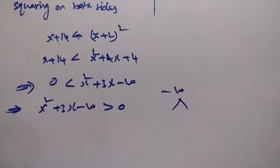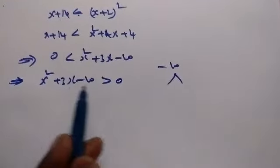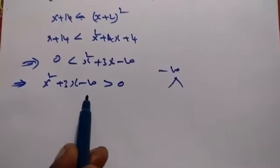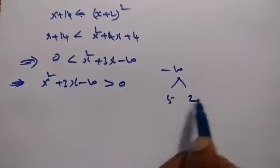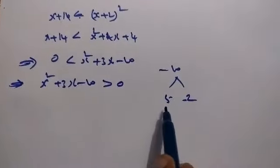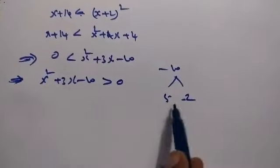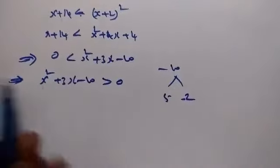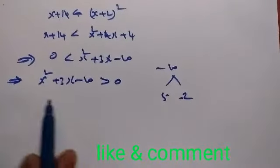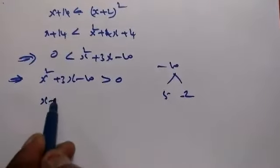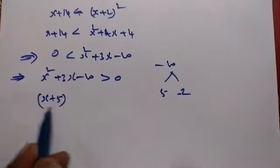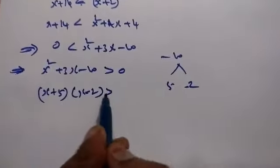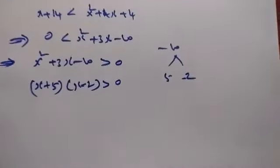For the equation x squared plus 3x minus 10, factoring gives 5 plus minus 2, where 5 into minus 2 equals minus 10 and coefficient is 1. So we get x plus 5 into x minus 2 greater than 0.